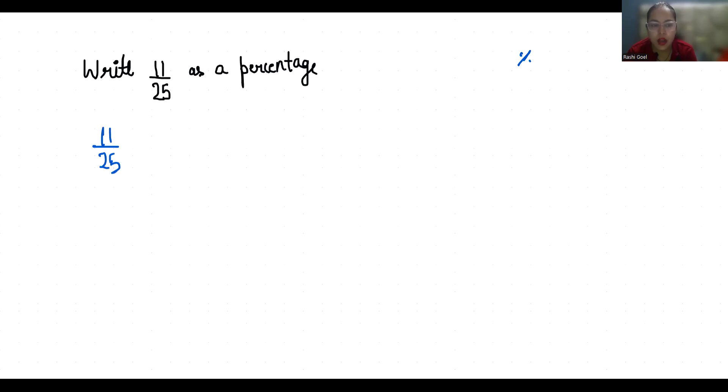Now we have to convert the denominator in terms of 100. So I am going to multiply by 4 in the numerator as well as in the denominator. So it becomes 44 by 100, which we can write as 44 times 1 by 100.